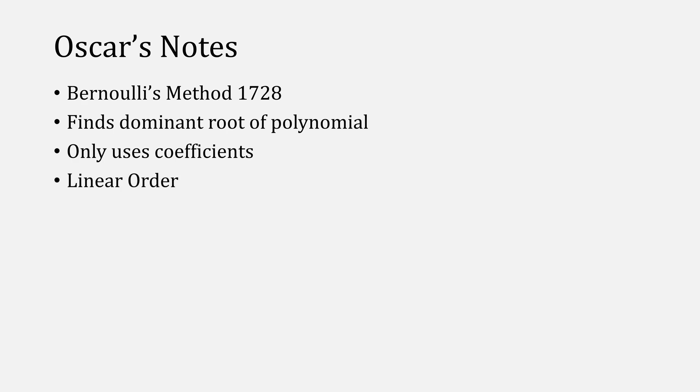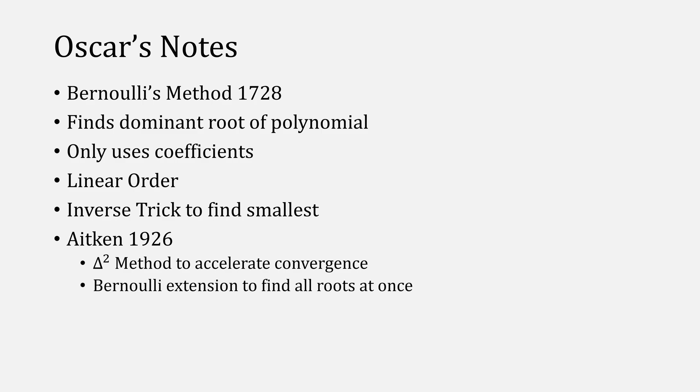You can use the inverse trick to make it find the smallest root instead of the dominant one. Aitken later published a method to accelerate convergence and find all the roots at once, which can also be done with the quotient difference algorithm.